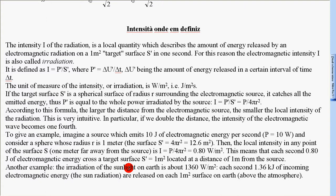Another example: the irradiation of the sunlight on Earth is about 1360 Watt on m², each second 1.36 kJ of incoming electromagnetic energy, the sun radiation, are released on each 1m² surface on Earth above the atmosphere.